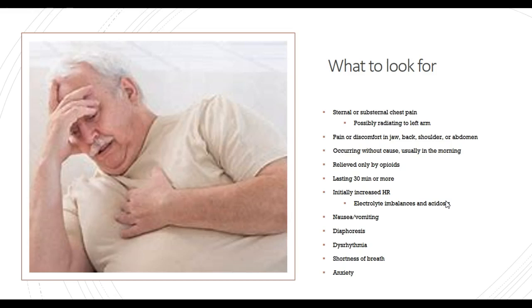Signs and symptoms of MI: sternal or substernal chest pain, possibly radiating to the left arm, jaw, back, shoulder, or abdomen. Remember that females typically present with non-classic signs — sometimes just a shoulder or back pain. Pain is relieved only by opioids, especially morphine, which has a number of cardiac advantages. Pain lasting 30 minutes or more, initially increased heart rate, electrolyte imbalances and acidosis, nausea, vomiting, diaphoresis, dysrhythmias, shortness of breath, and anxiety.